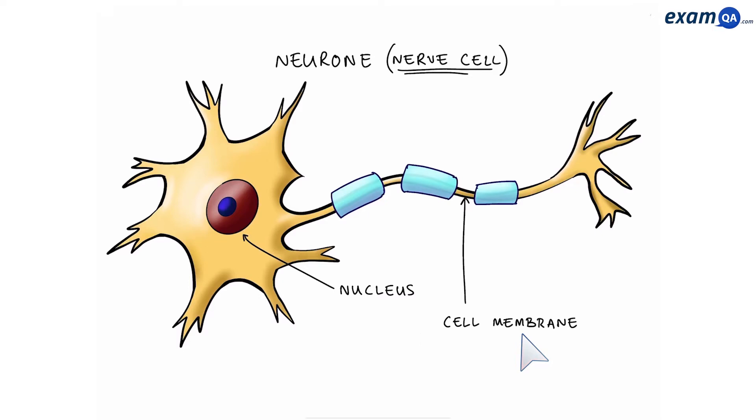However, it also has extra features. For example, here we have dendrites. These are connections which bring information into the neuron from other neurons. Here we have a stretched cytoplasm, also known as an axon. And the axon ends over here in the axon terminal, where it connects to other neurons.